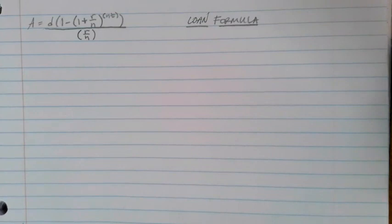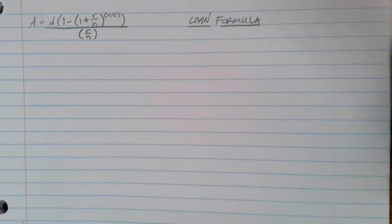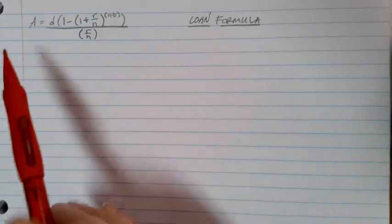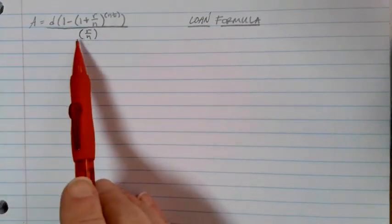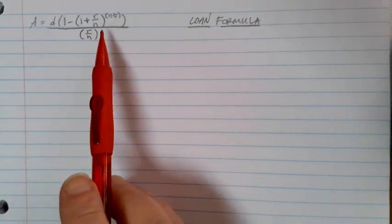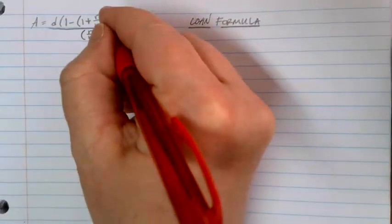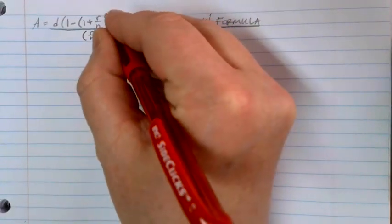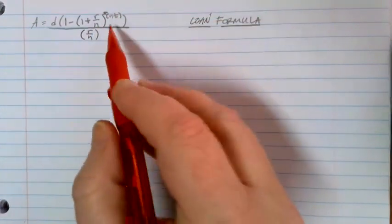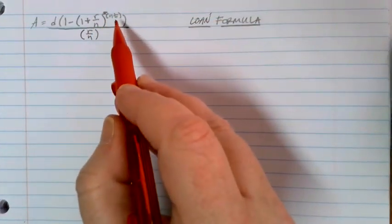So this is the loan formula. Notice that it looks very similar to our savings plan formula with a couple of important differences. All of our variables are the same, so we don't have to learn anything really new there.